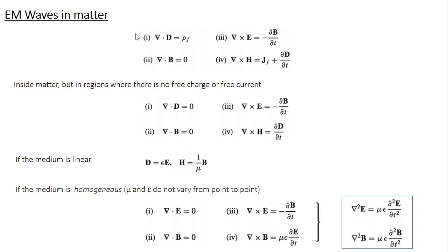Hope you remember the Maxwell's equation in matter. Divergence of D equal to rho F. Divergence of B equal to 0. Curl of E equal to minus dou B by dou T. Curl of H equal to JF plus dou D by dou T. Where rho F is the free charge density and JF is the free current density.